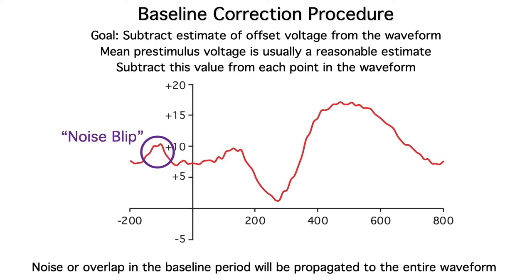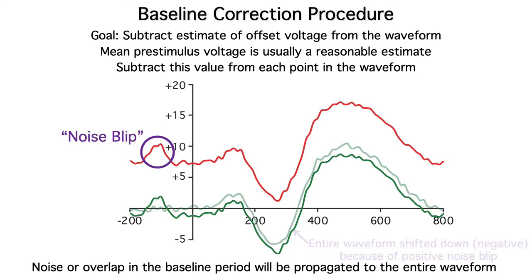This positive noise blip causes the estimate of the offset to be too positive, and when we subtract this too positive value from the whole waveform, the waveform is shifted down by too much. See how the baseline corrected waveform with the noise blip is shifted too far down?